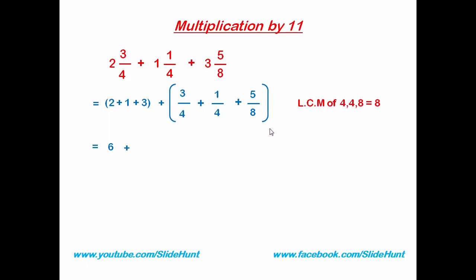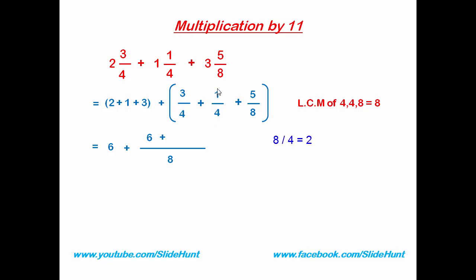The LCM of 4, 4, and 8 is 8. So I'm going to write 8 here. Divide: 8 by 4 is 2, and 2 times 3 is 6. Plus 8 by 4 is 2, and 2 times 1 is 2. Plus 8 by 8 is 1, and 1 times 5 is 5. Now add the numerators: 6 plus 2 is 8, and 8 plus 5 is 13. So we get 13 by 8, which is an improper fraction.